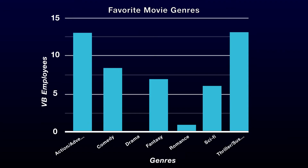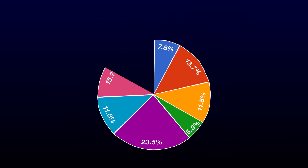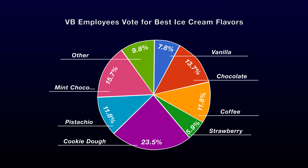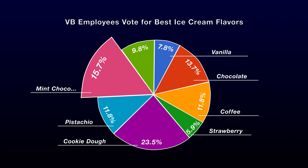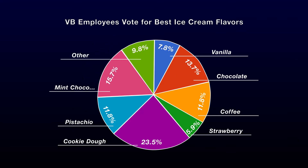For example, we polled Visible Body employees about their favorite movie genre, and here's the graph we made from their responses. A pie chart is data represented in a circle divided into sectors, each of which represent part of the whole. These charts are a great way to show proportion. For example, we polled Visible Body employees about their favorite ice cream flavor, and here's how we represented their responses. The majority of people preferred cookie dough, with mint chocolate chip coming in second. The larger the piece of the pie, the larger the proportion that the piece represents. These are just a few of the different kinds of graphs that you might encounter, and there are many more types, but this should be enough to get you started.